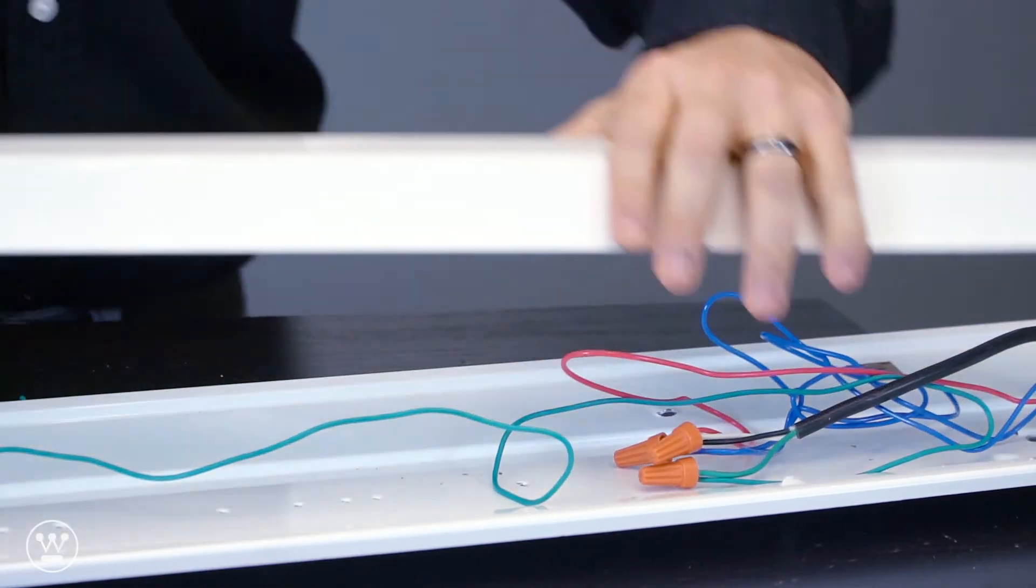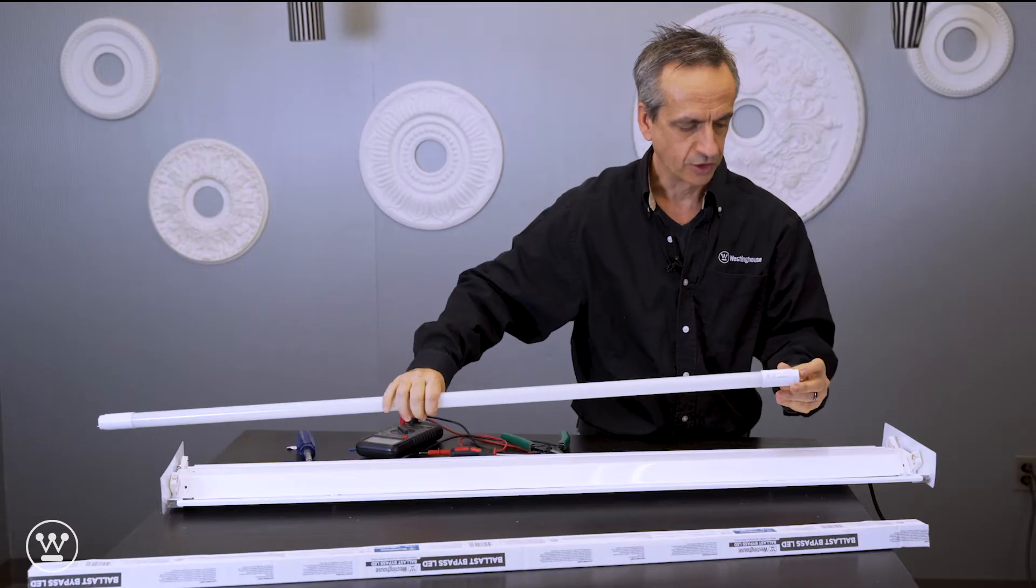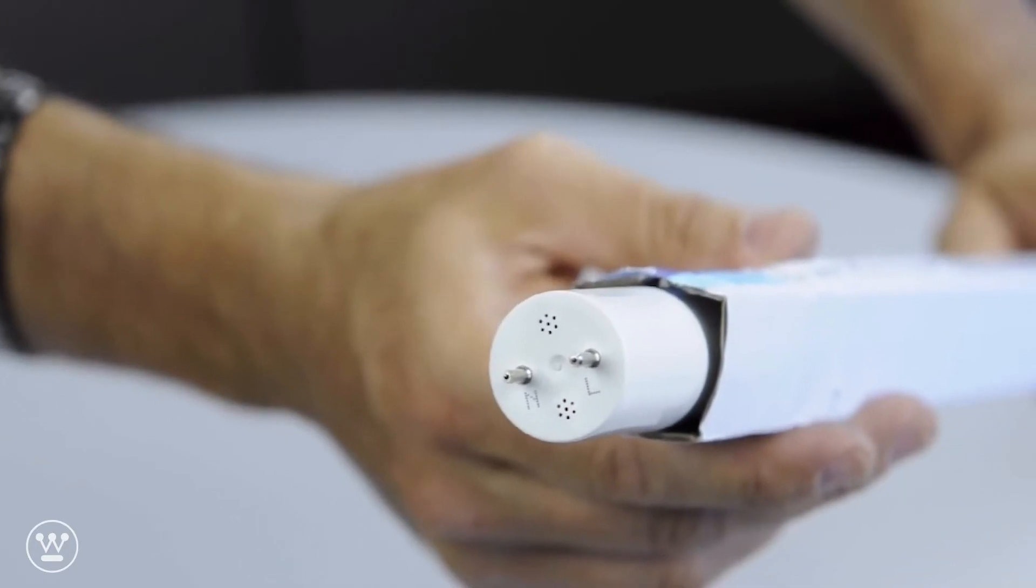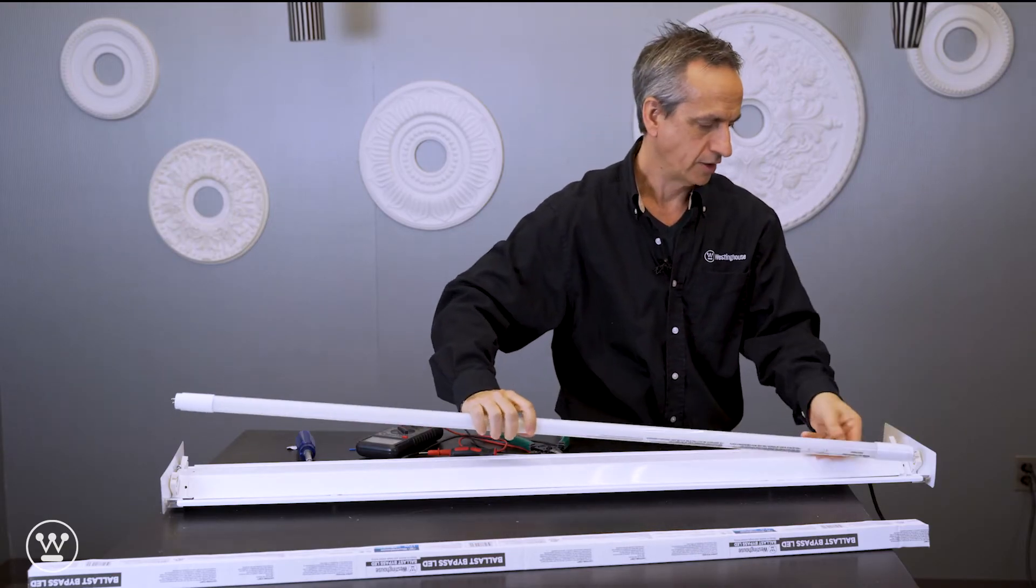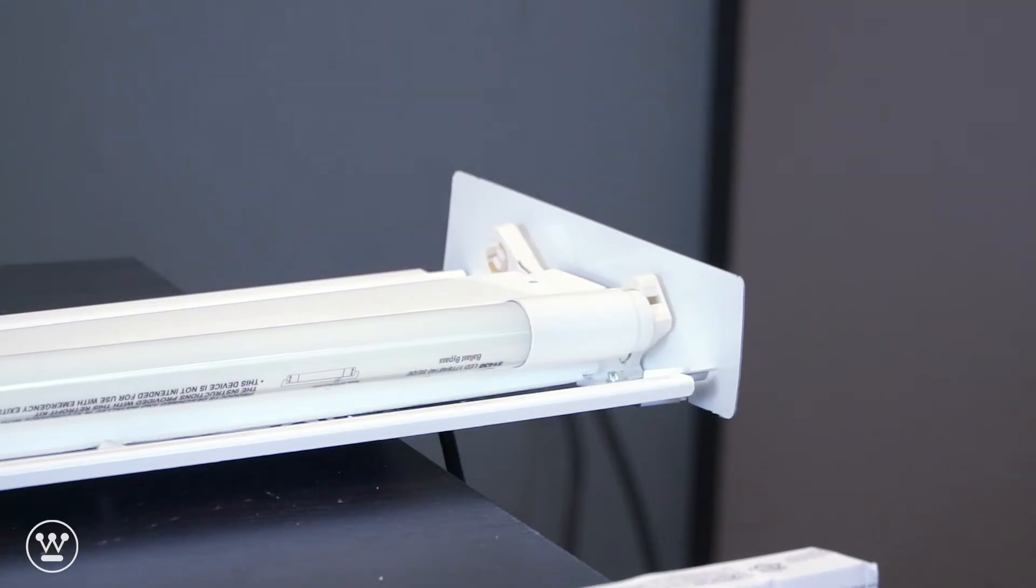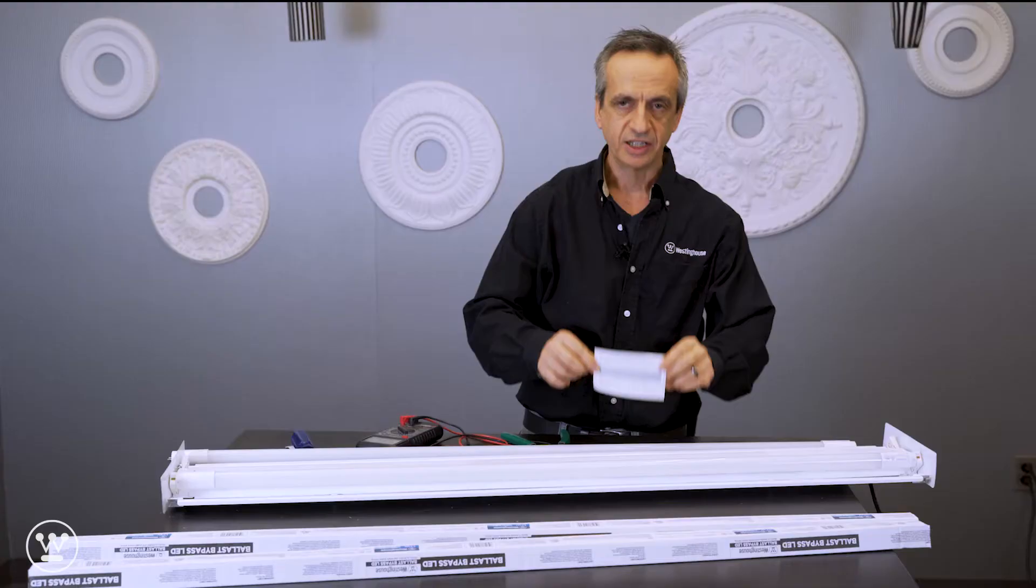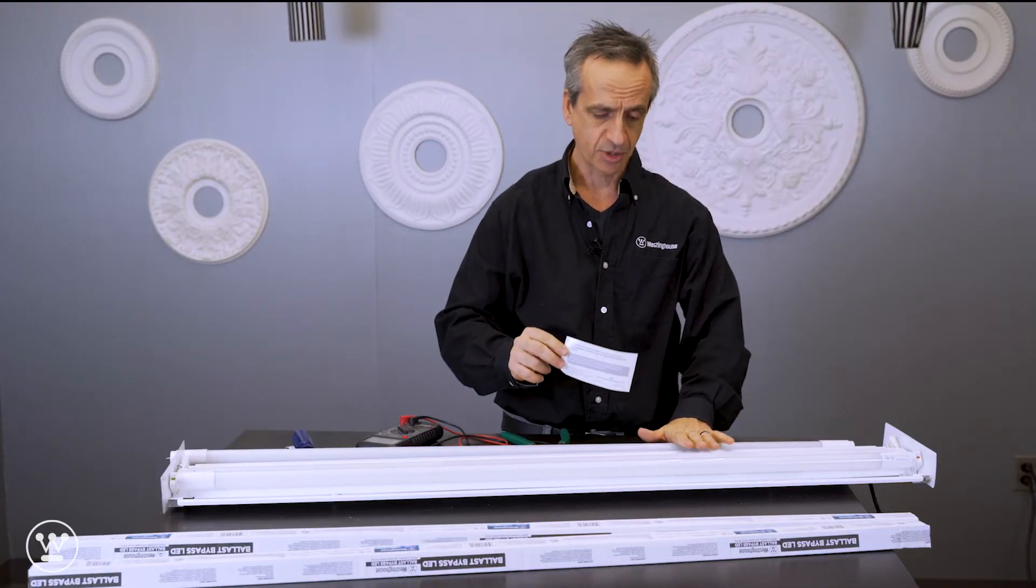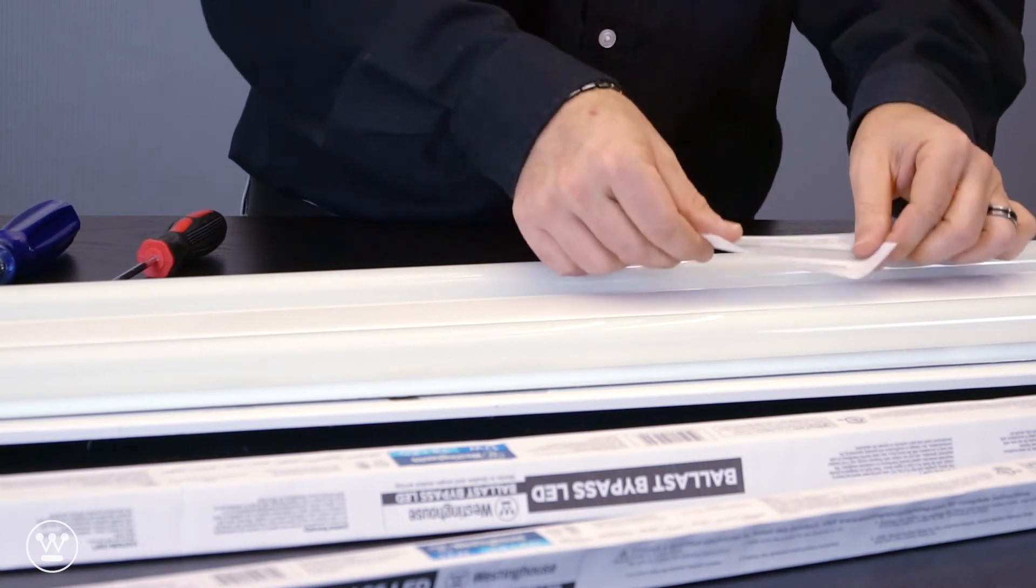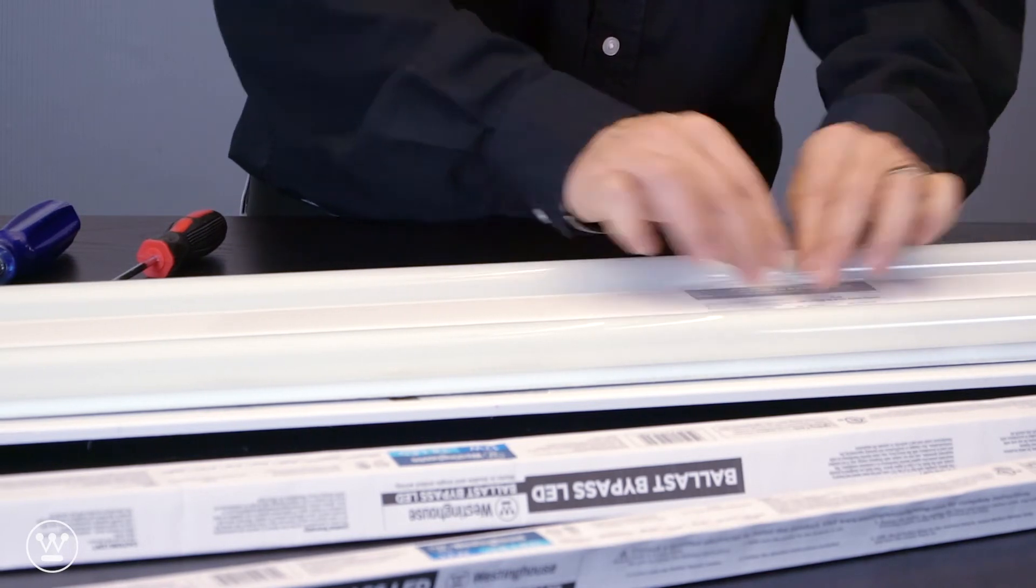Snap the cover back on. Please take note of the end that's marked L and N. This is the line and neutral end that goes to the power on the single wire installation. This is the label that comes with the TLED lamps, and you want to make sure it's placed in a very noticeable spot.